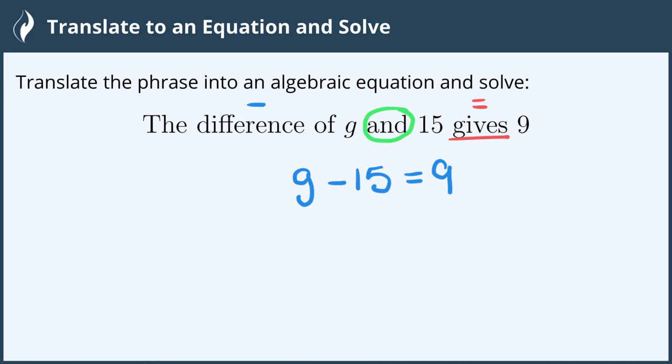Now our second part is to solve the equation. We look at the g and we want to isolate it or get it all by itself on this side of the equation. To do that we need to find all of the operations around it and do the opposite.